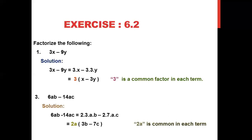Next question: Factorize 6ab - 14ac. Make the factors of 6 and 14. The factors of 6 are 2×3 and the factors of 14 are 2×7. Now clearly we see that 2 is common in both terms, and the variable 'a' is also common. So 2a is common in each term. When we take 2a common from the first term, 3b is left. Then minus, and taking 2a common from the second term, 7c is left. So the answer is 2a(3b - 7c), mentioning that 2a is the common factor.